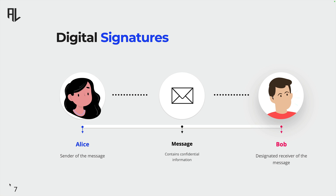She then sends the document along with the attached digital signature to Bob, the recipient. When Bob receives the document, he can use Alice's public key, if we are using asymmetric cryptography, to verify the signature. If the signature matches the document and can be verified, it proves that the document has not been tampered with and that it indeed came from Alice. This process also ensures non-repudiation because with a valid digital signature, you cannot deny that you sent the document unless somebody else has compromised your keys.